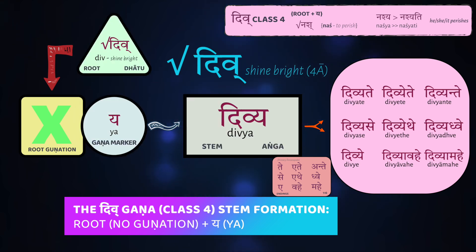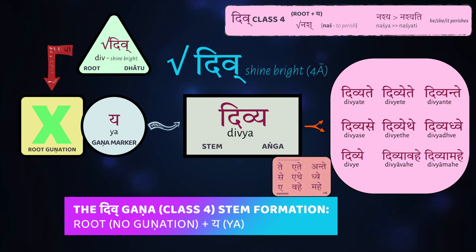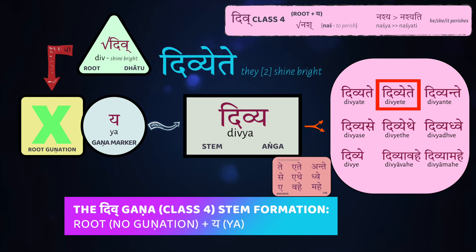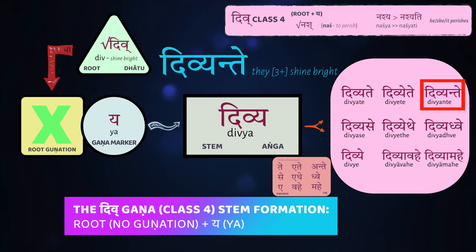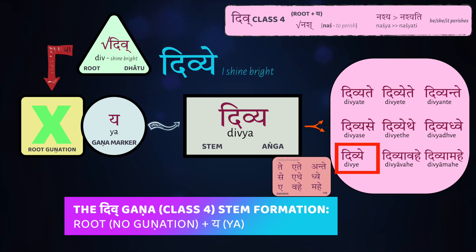So dīw plus yā gives you the stem dīwya, and then you add your endings. The verb itself is an ātmanepada verb, so it takes the ātmanepada endings: te, ete, anti, and so on. So dīwyate — she shines bright; dīwyete — the two of them shine; dīwyante — three or more of them are shining brightly. Dīwyase — you shine bright. Dīwye — I shine bright.